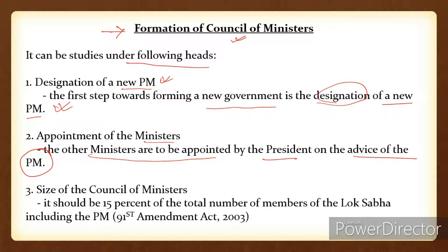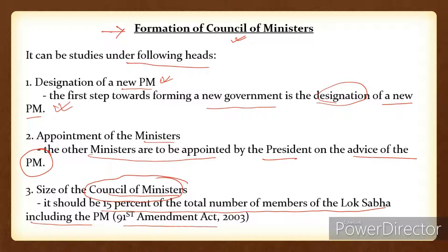Point number three is size of the Council of Ministers. How many ministers will be appointed? It should be 15% of the total number of members of the Lok Sabha, including the PM. This is according to the 91st Amendment Act of 2003. So if the Lok Sabha has 100 members, then 15% of that figure will be there in the Council of Ministers.